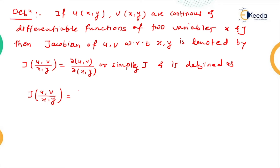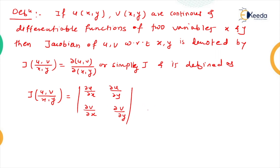The Jacobian J(u,v / x,y) is defined as a 2×2 determinant: in the first row, ∂u/∂x and ∂u/∂y; in the second row, ∂v/∂x and ∂v/∂y. This is because u and v are functions of two variables, so we differentiate each with respect to both x and y. An alternative notation uses u_x, u_y, v_x, v_y as shorthand for these partial derivatives.